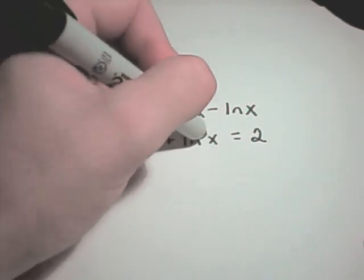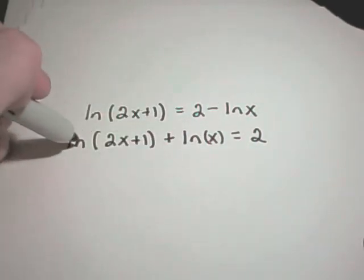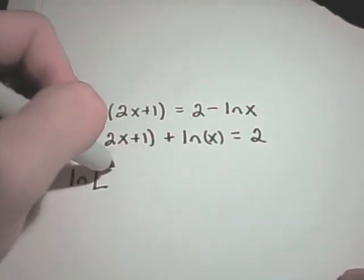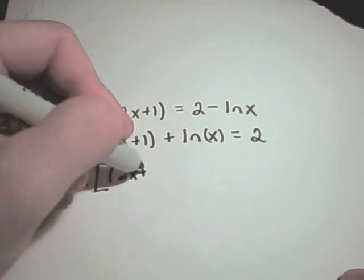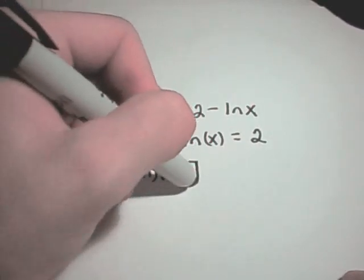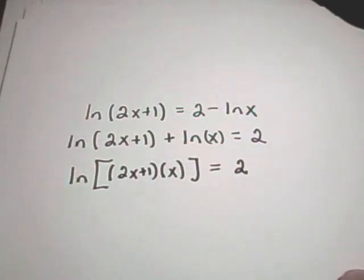And now I'm going to use my properties of logarithms. Remember, if you have a logarithm and addition in between, you can rewrite that as multiplication. So I'll have 2x plus 1 times what's inside the other logarithm, which is simply x. And that's equal to 2 on the right side.